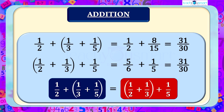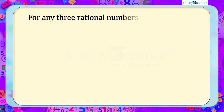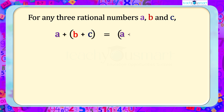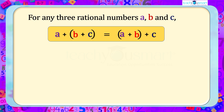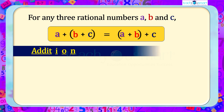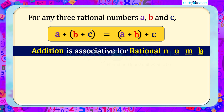In general, we can say that for any three rational numbers a, b, and c: (a + b) + c = a + (b + c). Therefore, addition is associative for rational numbers.